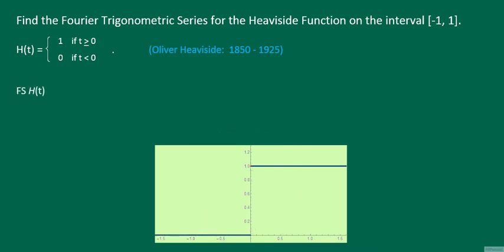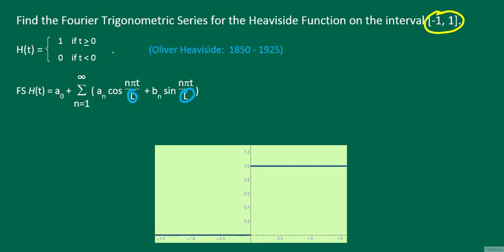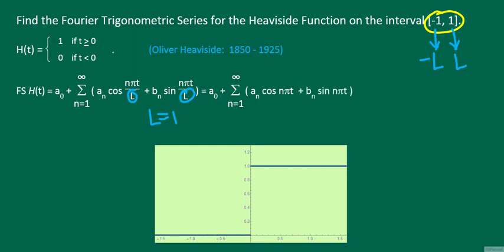The Fourier series of capital H starts off with the constant term a sub 0, followed by the summation of the trigonometric terms — specifically, a sub n times cosine(nπt/L), and b sub n times sine(nπt/L). Capital L refers to the half-length of the interval. Since the interval from minus 1 to 1 is symmetric about t equals 0, we have L equal to 1, so the Fourier series becomes a sub 0 plus the sum of a sub n cosine(nπt) plus b sub n sine(nπt).